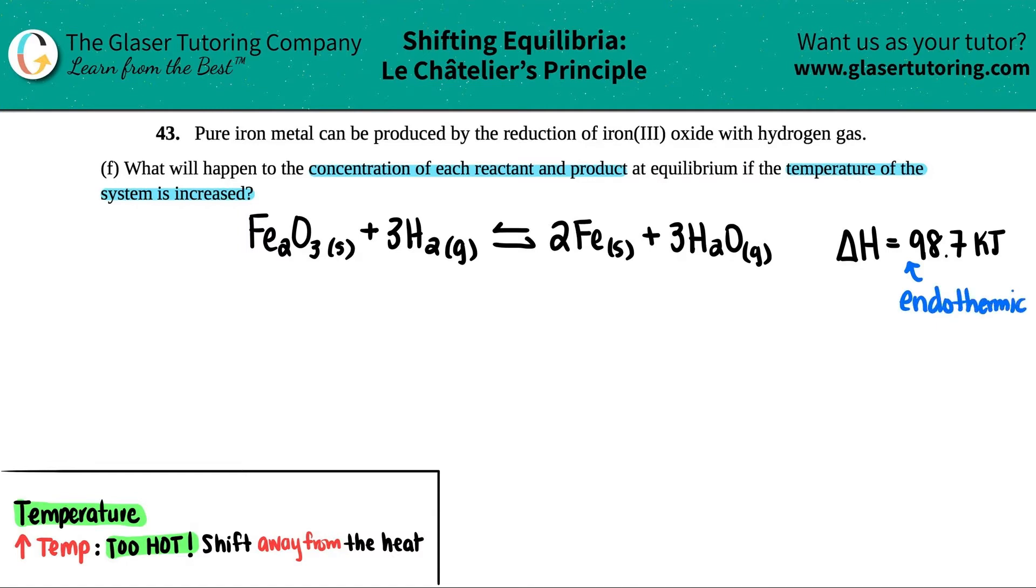And endothermic reactions always absorb heat. They do not release them. They hold them in. So whenever you see that you have a positive delta H endothermic, the heat is always going to be on the reactant side. So I'm just going to say plus heat here.